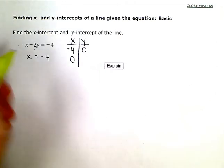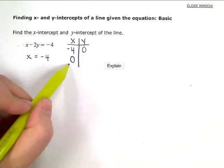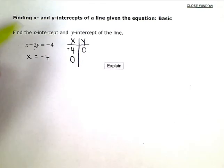Now, if I want the y-intercept, I'm going to zero out or ignore this term, the x, the opposite variable. And if I do that, ignore that term, I'm left with negative 2y equals negative 4.